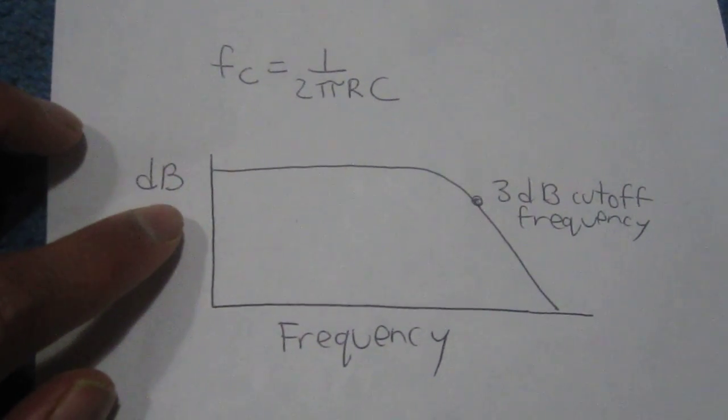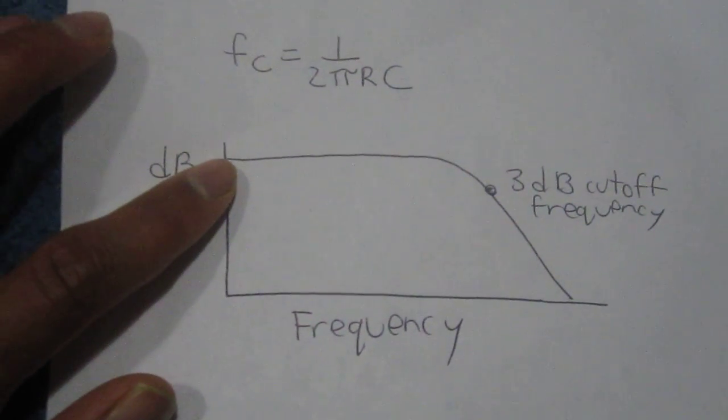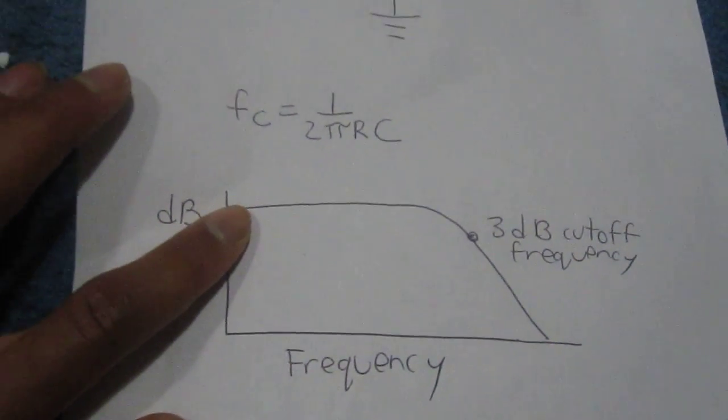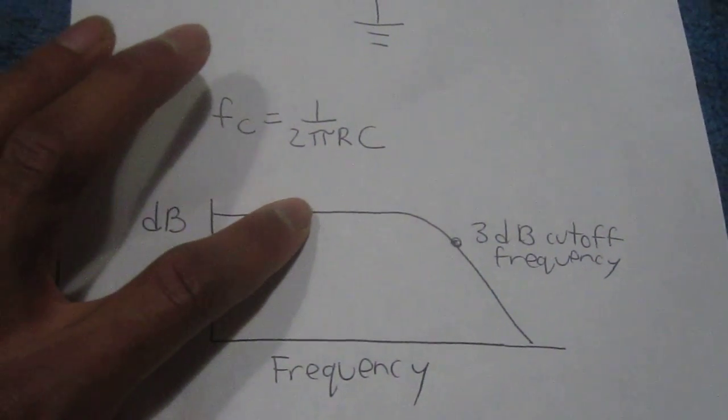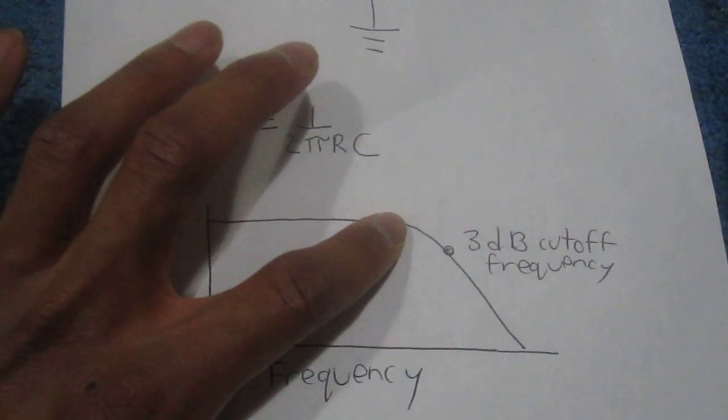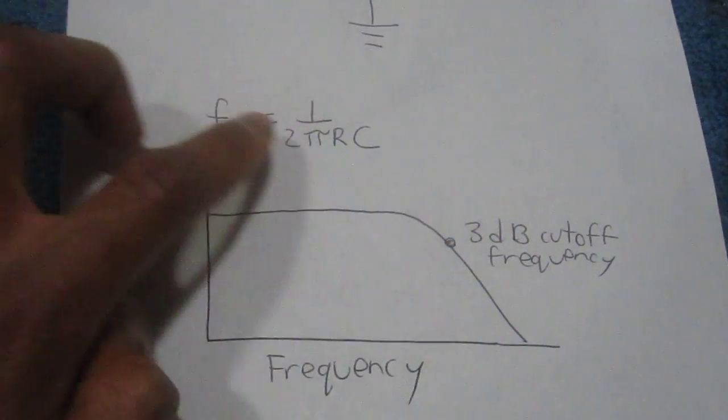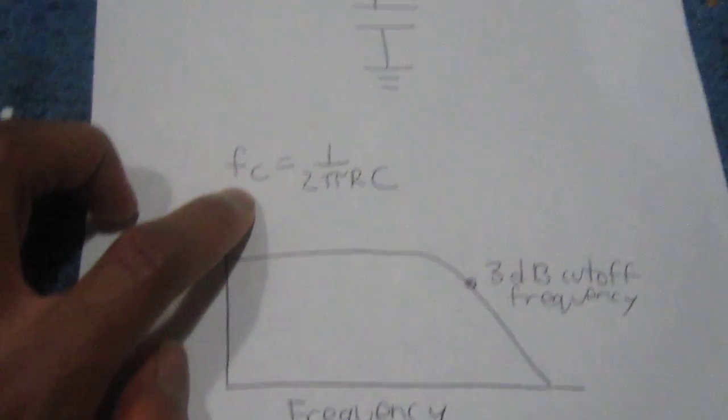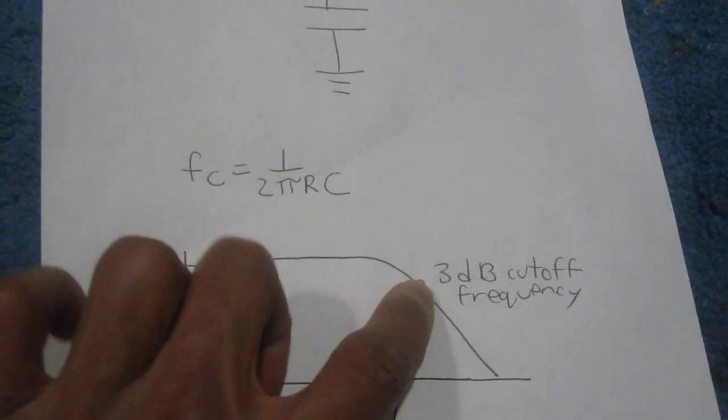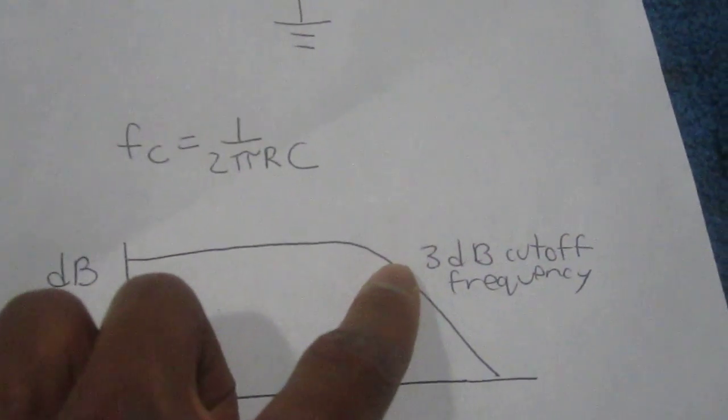And this is the characteristics curve of a low-pass filter. You can see it passes low frequency signals with full gain until it reaches a certain point. And this again is what you calculate from the formula where it declines 3dB.